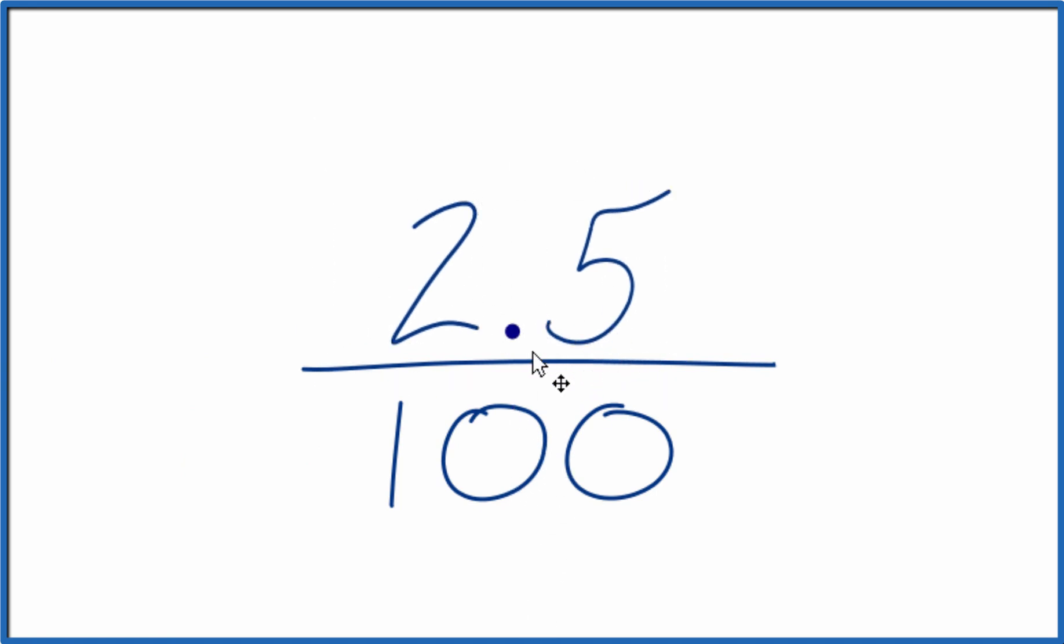But let's get this to a whole number. We could just move the decimal one place here, as long as down here we move the decimal one place as well, so just adding a zero here. So we end up with 25 over 1,000. 25 over 1,000, that's our fraction.